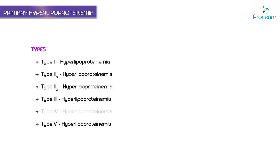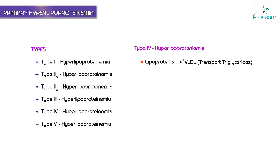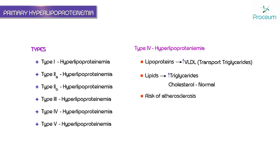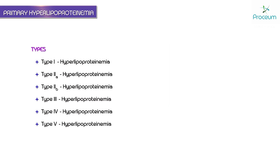In type 4 hyperlipoproteinemia, the lipoprotein which is increased is VLDL — very low density lipoprotein. VLDL mainly transports triglycerides, so the lipids elevated are mainly triglycerides whereas cholesterol is normal. There is risk of atherosclerosis and the treatment is phenofibrates and nicotinic acid.